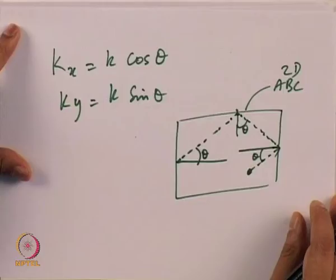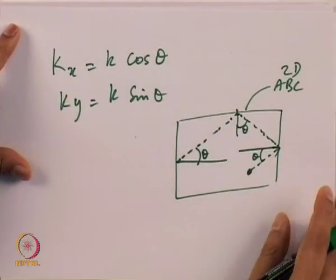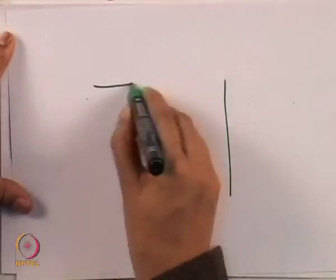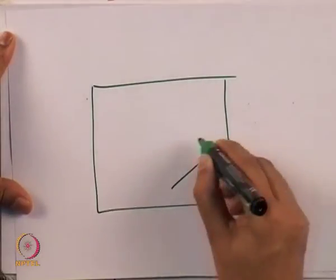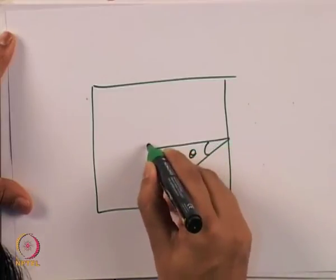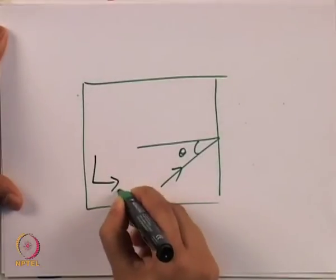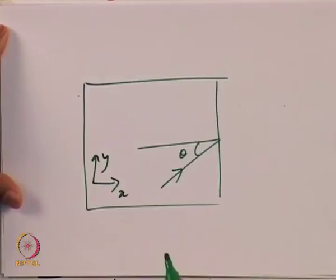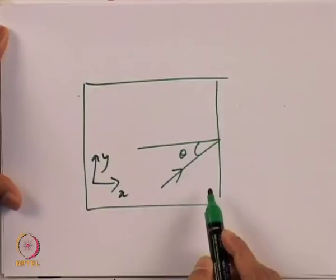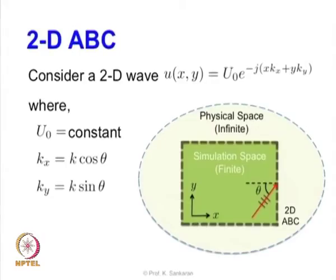Let us consider the first theta — this is the normal and this is the angle of incidence. This is the x axis and this is the y axis, and we are simulating this infinite domain using the finite space shown in the figure. Now we can write the partial differentiation of the solution u with respect to x and get an expression for that.